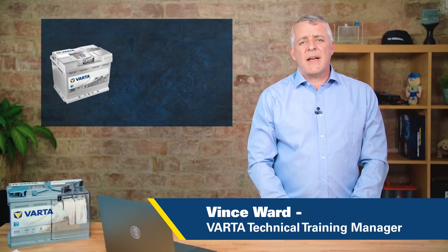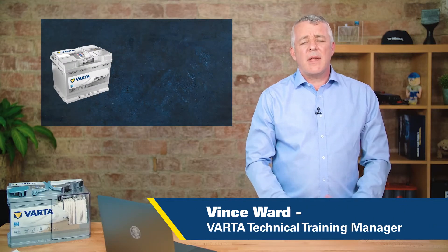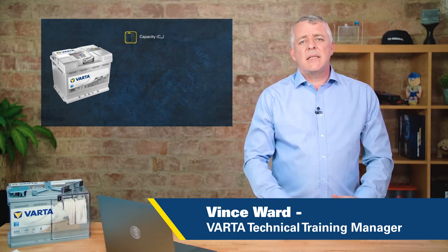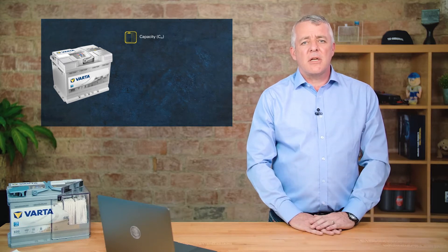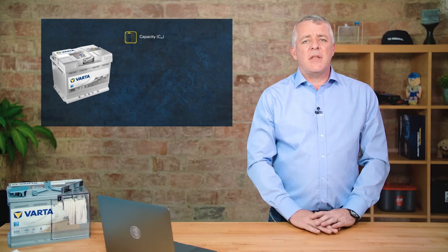Let's talk about the second electrical rating that is on the label: capacity. Capacity is the amount of energy that the battery can store. If we have a look at this battery, we can see that it is a 60 amp hour battery.